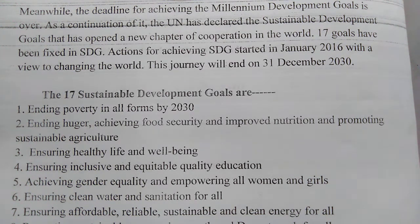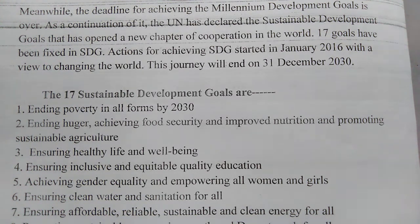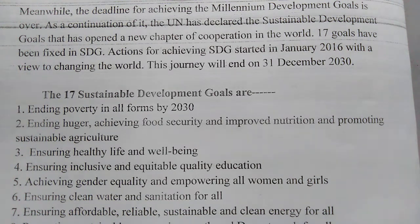Goal two: ending hunger, achieving food security, improved nutrition, and promoting sustainable agriculture. By promoting sustainable agriculture we will grow more crops, then we can end hunger and ensure sufficient food and nutrition for all. Goal three: ensuring healthy life and well-being. Goal four: ensuring inclusive and equitable quality education — we have to impart equitable and inclusive education for all human beings.